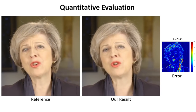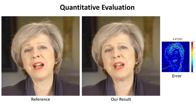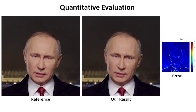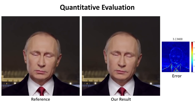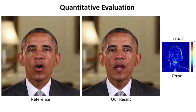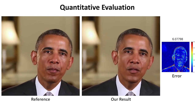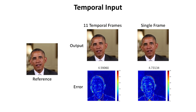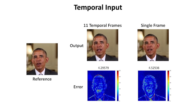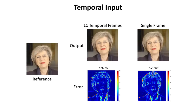We evaluate our approach quantitatively in a self-reenactment setting, in which the source and target videos are taken from different parts of the same video. The error map shows the per-pixel root-mean-squared error in RGB color space with respect to the reference. Our results are nearly indistinguishable from the real video. We next evaluate our space-time conditioning strategy. Our novel space-time conditioning significantly improves the temporal stability of generated videos and leads to a much smaller photometric error.